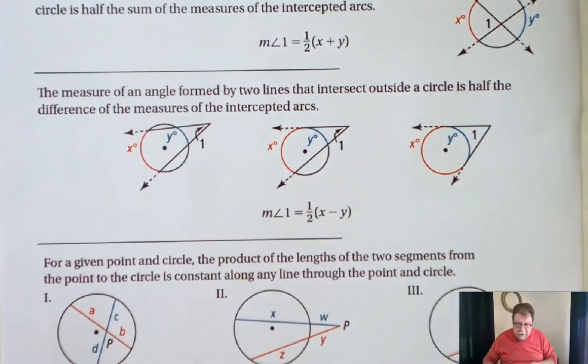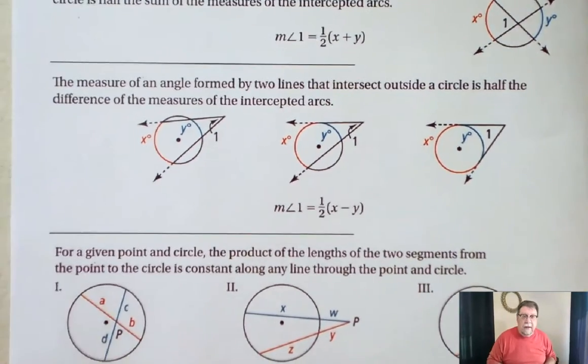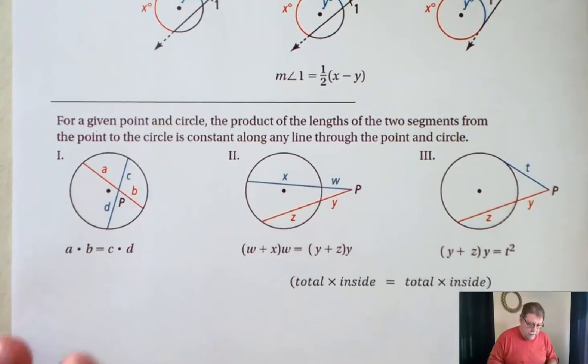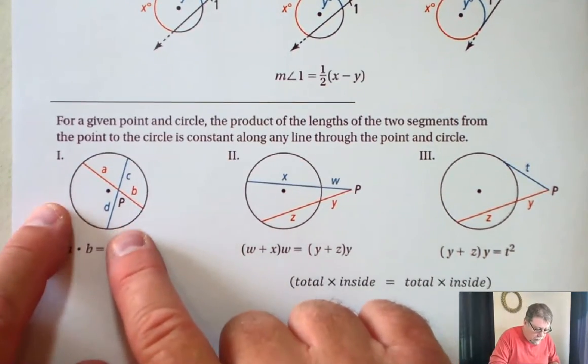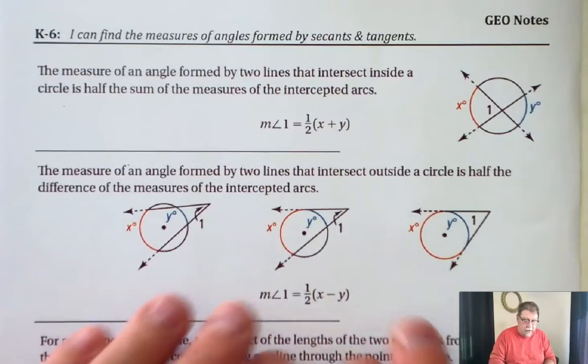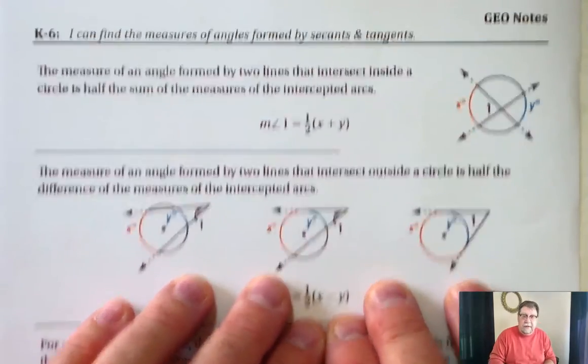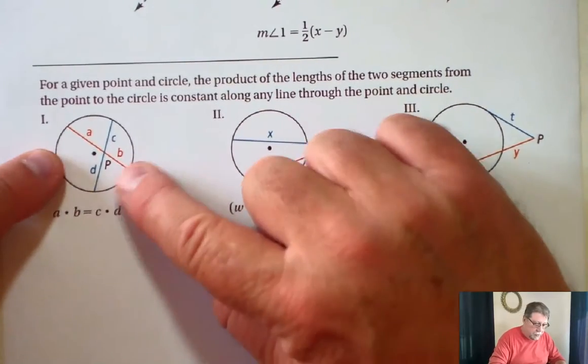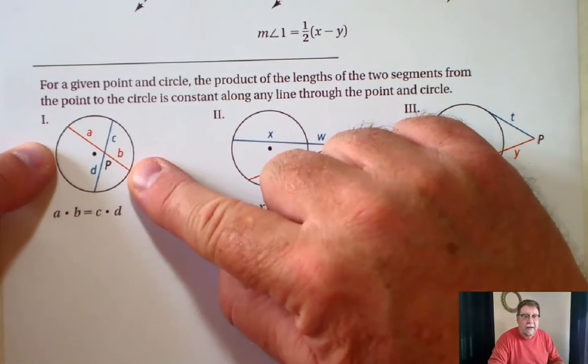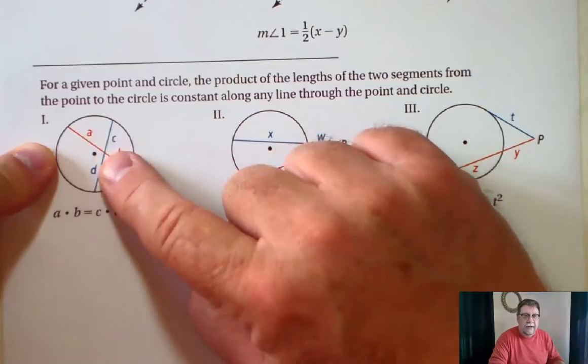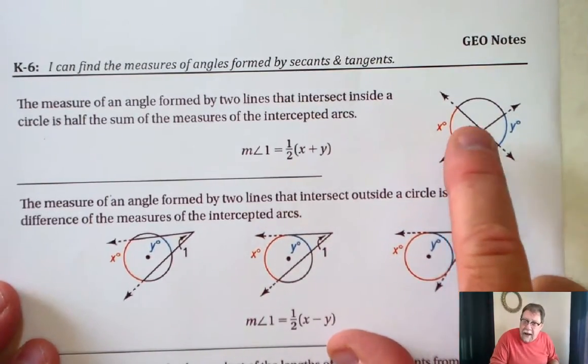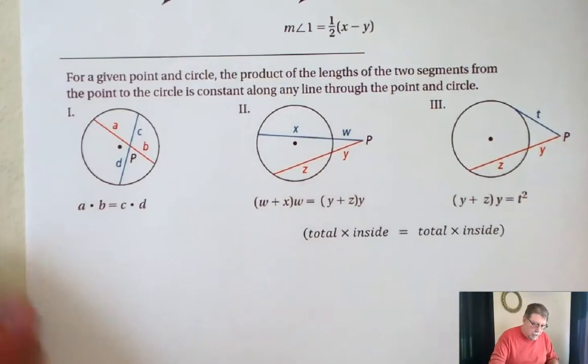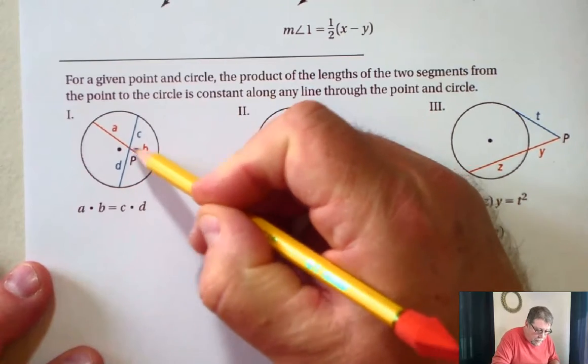And then the last one has to do with lengths of segments. These are lengths of angles, this is the length of an angle, measure of an angle. These are lengths of segments. So we have two segments inside a circle. They intersect, kind of like up here. But instead of looking for the angle measure, we're looking for the measure of each segment.